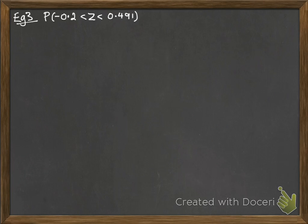In between these two values. So let's have a think about what that looks like. We've got 0.491 and minus 0.2, and we're finding that area there in between those two values.